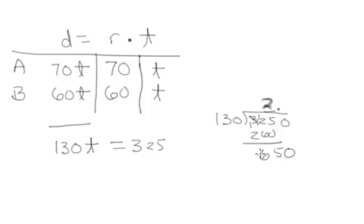So, 130 goes into 650. And let's see, it looks like it might be 5. Let's check 5. 5 times 0 is 0. 5 times 3 is 15. And 5 times, and carry the 1. 5 times 1 is 5. Plus the 1 is 6. Okay, so it works out perfect. So it's 2.5.